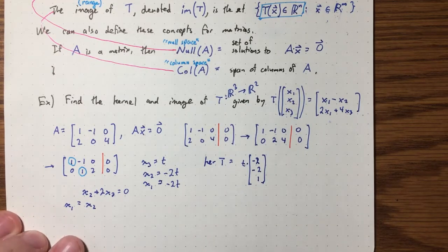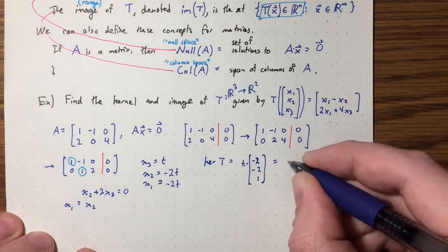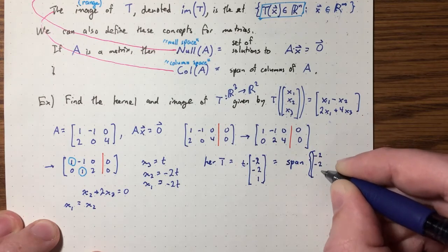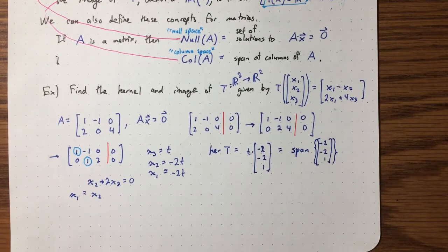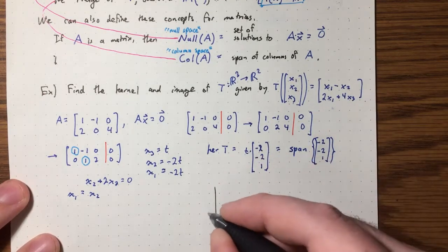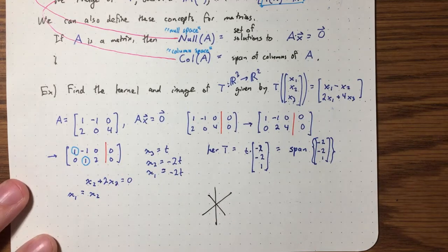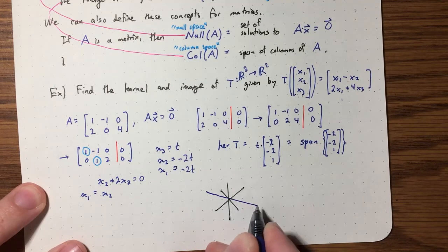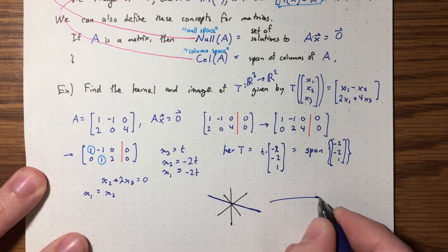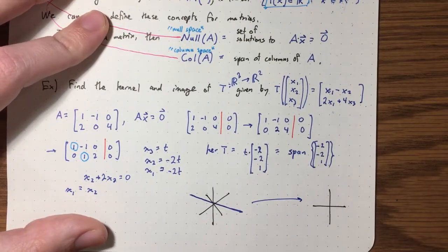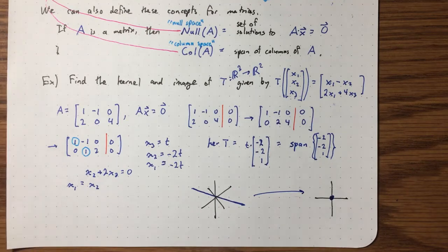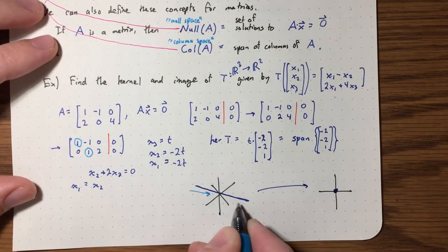So the kernel of T is all vectors of the form t · (-2, -2, 1), which we can write as the span of (-2, -2, 1). This is a line in three-dimensional space — geometrically, the entire line gets collapsed down to the zero vector in R².